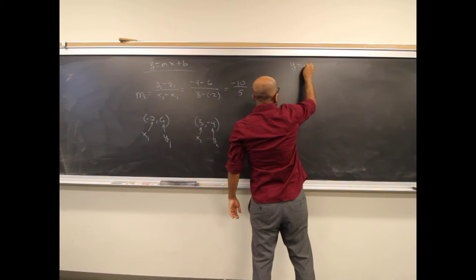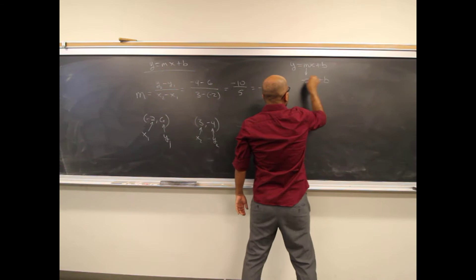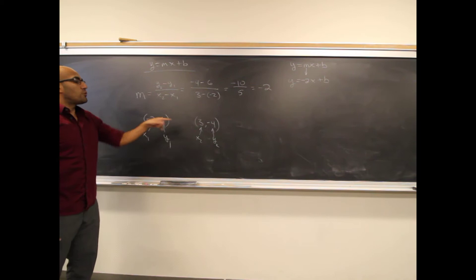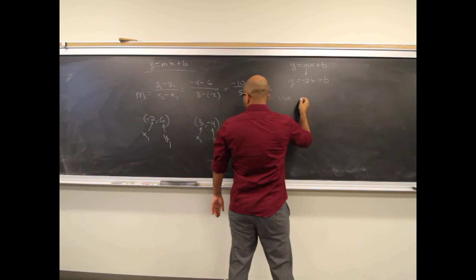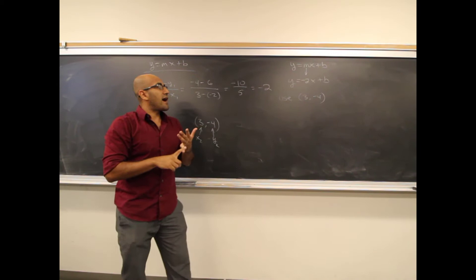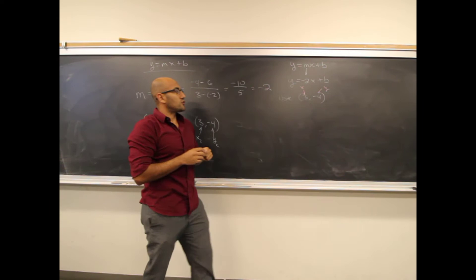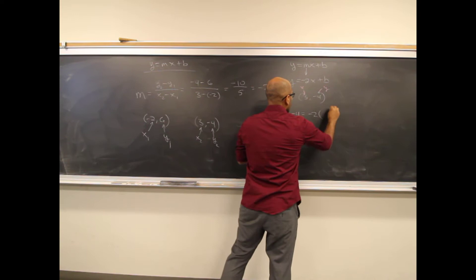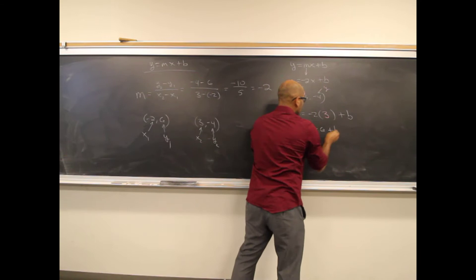Going back to y equals mx plus b, we've discovered m is negative 2. Now we need to find b. We've been given two points — either one will give the same answer. Using (3, negative 4): negative 4 equals negative 2 times 3 plus b, so negative 4 equals negative 6 plus b, meaning b equals 2.